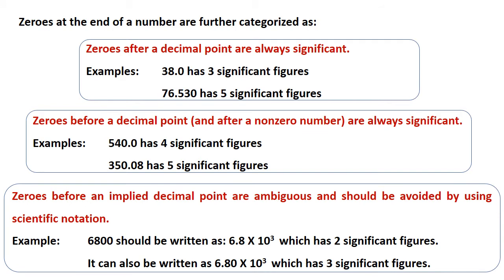The last rule is: zeros before an implied decimal point are ambiguous and should be avoided by using scientific notation. For example, 6800 should be written as 6.8 × 10³, which has two significant figures. It can also be written as 6.80 × 10³, which has three significant figures. So the same number can be written in two forms having different significant figures.